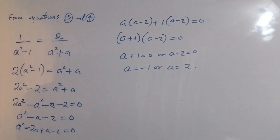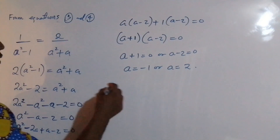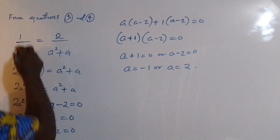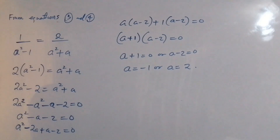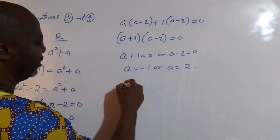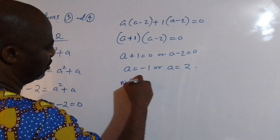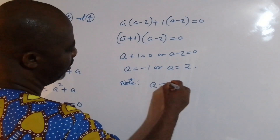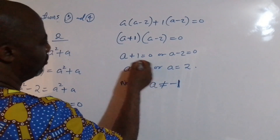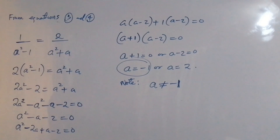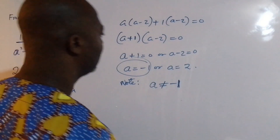Now, if we take a equal to minus 1, that will make the denominator of equation 3 equal to zero, and we don't want a denominator of zero. The same issue appears in equation 4. So it should be noted that a cannot equal minus 1 — we reject a equals minus 1, and we stick with a equals 2.